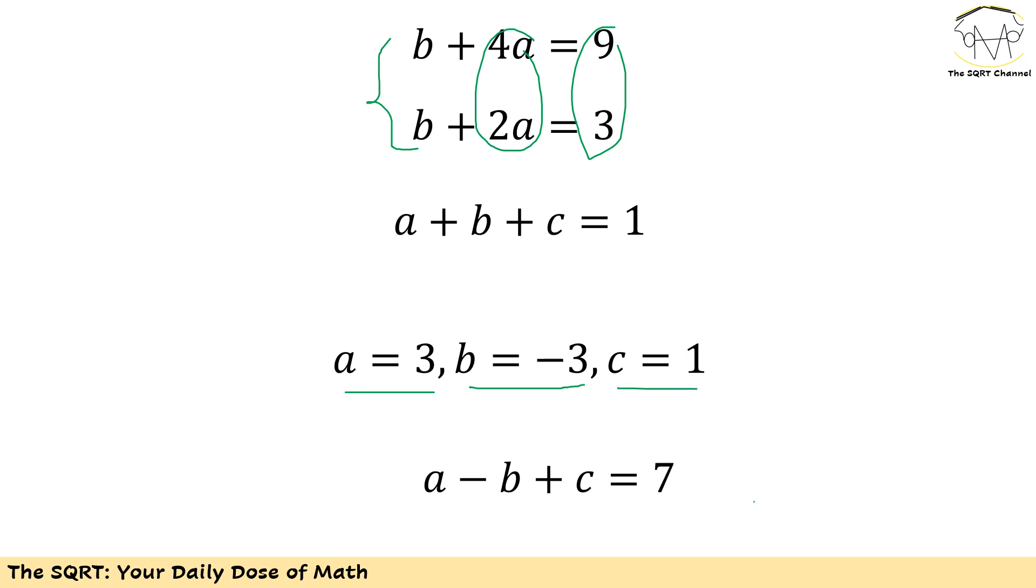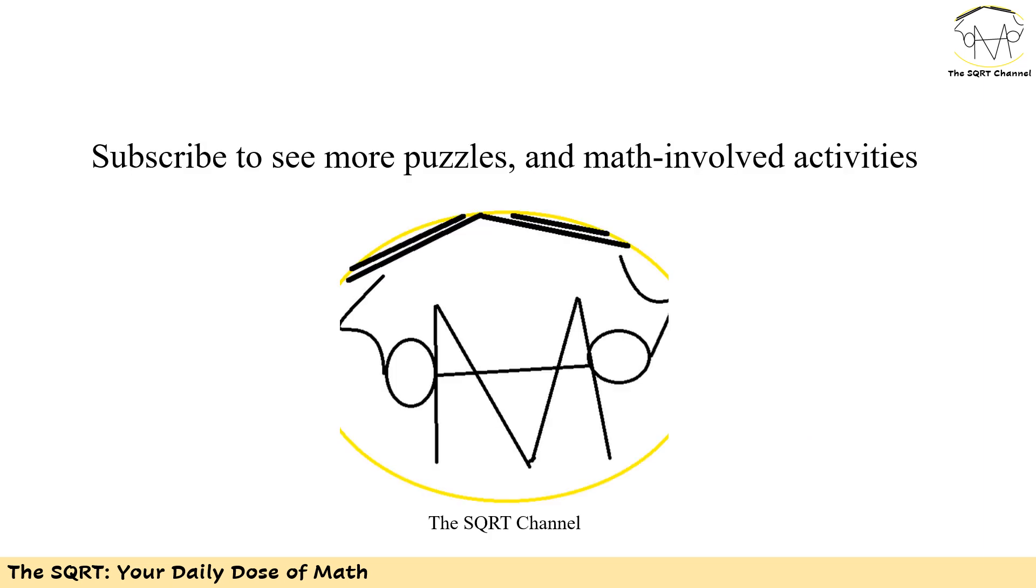So basically, a minus b plus c is going to be 7, and that's our final answer. This is the SQRT channel and I hope to see you in the next video.